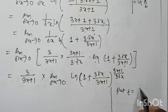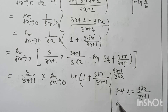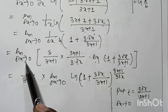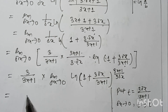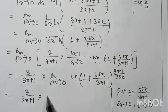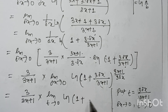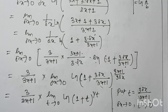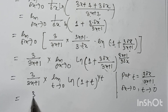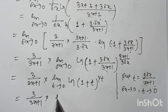Let t = 3δx/(3x + 1). Then as δx tends to 0, t also tends to 0. So we get: [3/(3x+1)] times limit as t tends to 0 of ln(1 + t) to the power (1/t). This equals [3/(3x+1)] times ln(e).